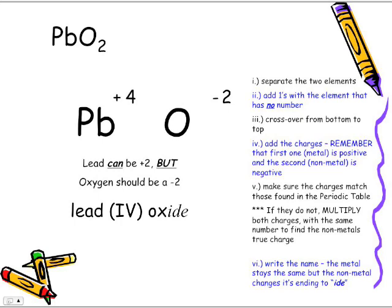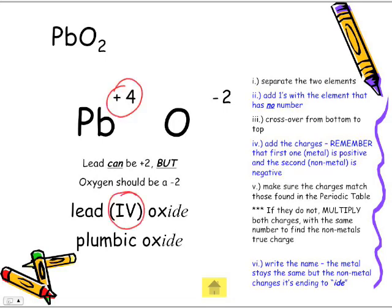In terms of the stock system, it is lead(IV) oxide. Or using the classical system, it is plumbic oxide — IC for the higher of the two charges — because we are using the plus four charge.